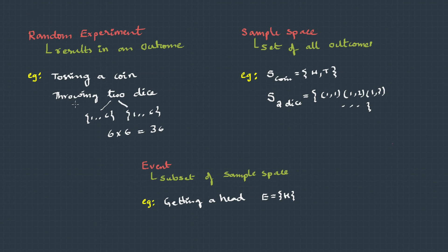And for the random experiment throwing two dice, I could define an event like getting the sum of the numbers on the dice is 10. So E will have three possibilities that is 4, 6, 5, 5 and 6, 4. In each case, if you add both, the sum is 10. And this is a subset of the sample space for throwing two dice.